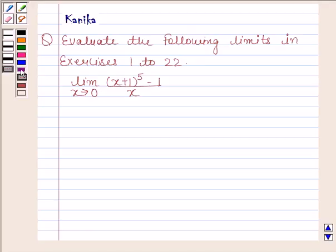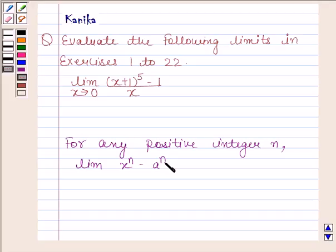Before solving this question, we should first be well versed with theorem 2 given in your NCERT article. So, theorem 2 states that for any positive integer n, limit of x^n minus a^n upon x minus a as x tends to a is equal to n times a to the power n minus 1. The knowledge of this theorem is the key idea in this question.